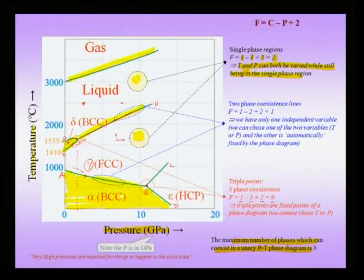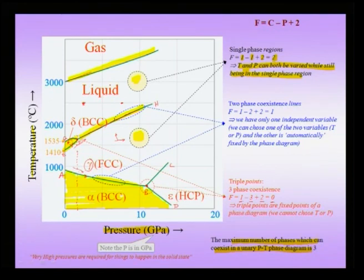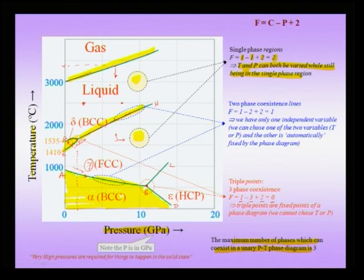Along single-phase regions the degrees of freedom is 2, meaning both pressure and temperature can be varied. Along two-phase coexistence lines — such as the gas–liquid line or the liquid–gamma line — the degrees of freedom is 1, meaning if I choose temperature, the pressure is automatically determined. There are also three-phase coexistence points which are invariants of the phase diagram.